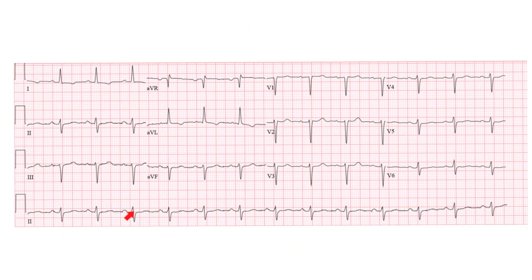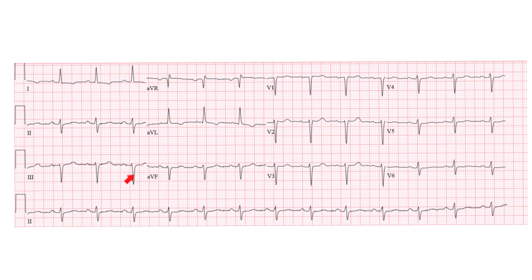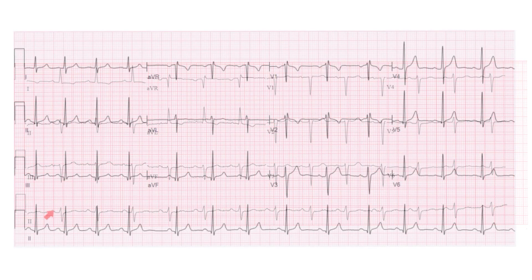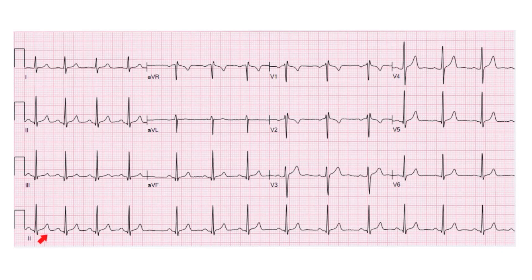Let's go over some EKG examples. On this first EKG, we can see an upright P wave throughout lead 2, similar in shape and morphology. Each P wave is followed by a QRS complex with a constant PR interval. The RR interval is regular. The rate is 300 divided by 3.5 large boxes — roughly 70 to 80 bpm. The QRS is less than one large box, so less than or equal to 100 milliseconds. This is sinus rhythm.